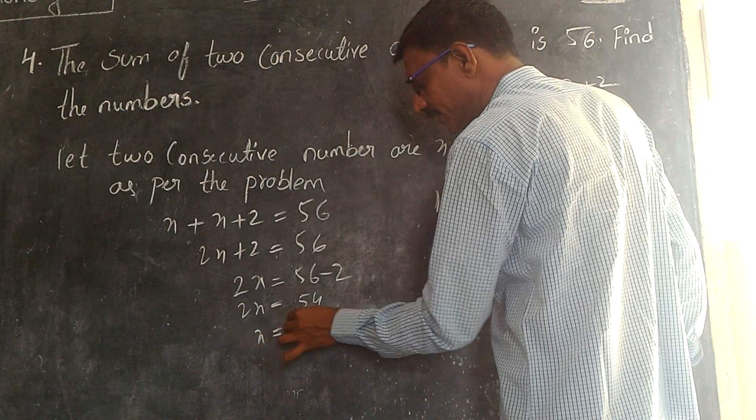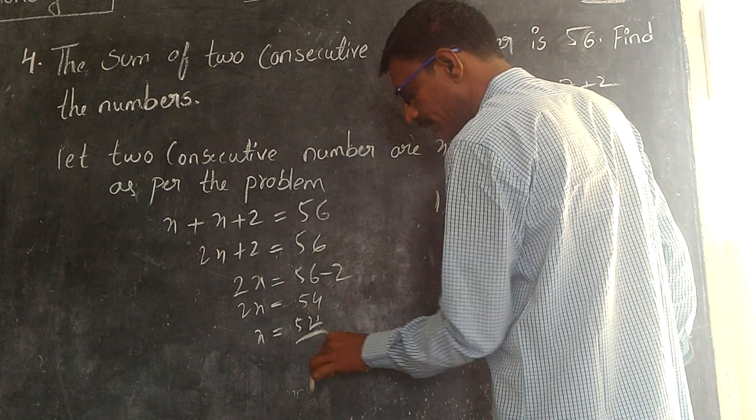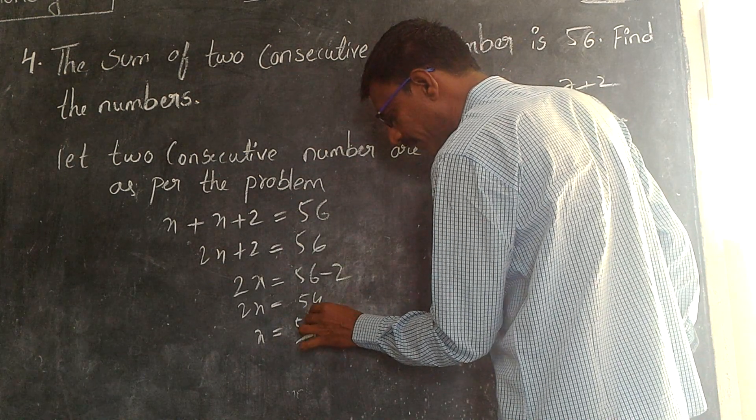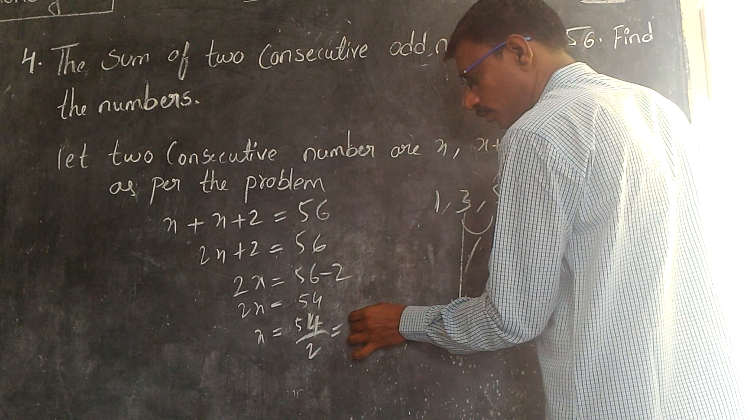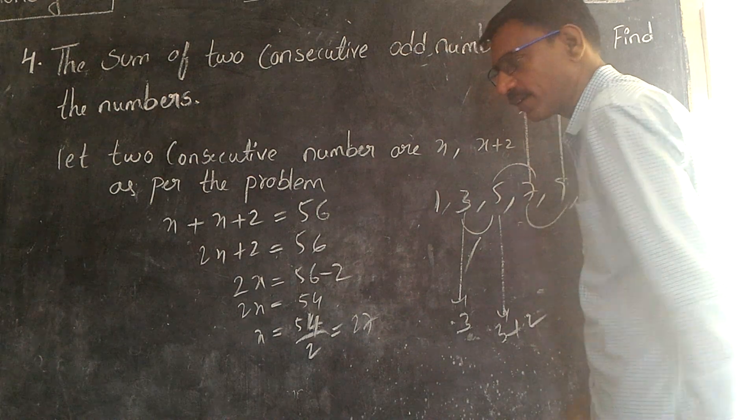Therefore two x is equal to fifty-four. Then x is equal to fifty-four by two. That is equal to twenty-seven.